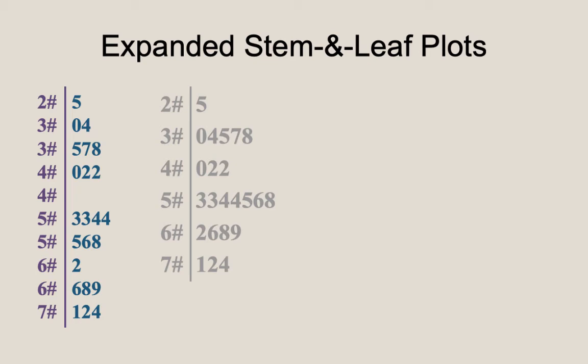A couple of things to note: first and foremost, the fives always go in the second of the two rows. Next, we only have one row for the 20s and the 70s, and this was only because there were no data values from 20 to 24 or from 75 to 79, so the extra rows at either end of the plot are unnecessary.